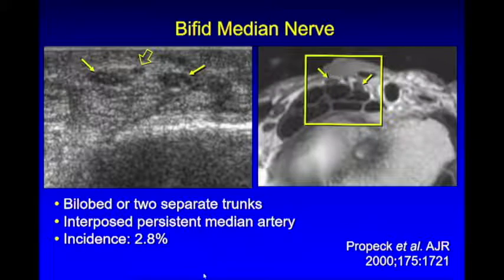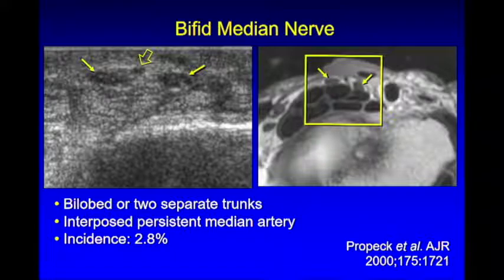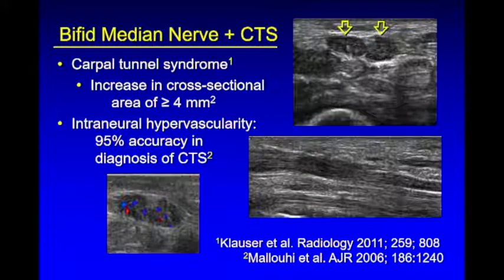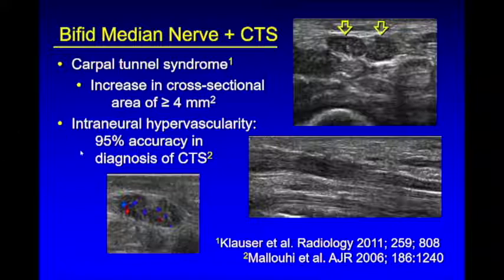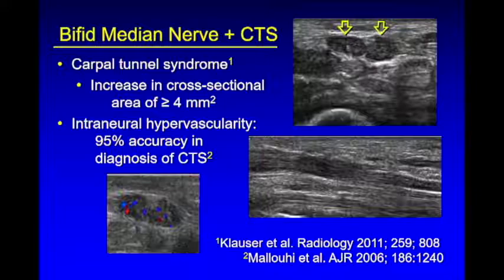As we leave the carpal tunnel, be aware of the bifid median nerve — a normal variant with an incidence quoted at 3%, probably closer to 5%. When you have a bifid median nerve, you almost always will have a persistent median artery, which is important information if someone is going for open carpal tunnel release. For two nerve trunks, combine the areas and use 4 mm² as your threshold for the proximal-to-distal difference. If you see blood flow with any nerve, that is abnormal — this finding alone has 95% accuracy — though I rely more on nerve enlargement.